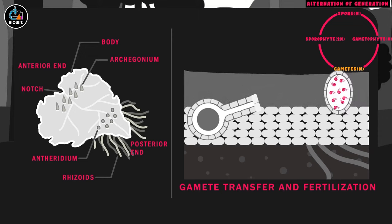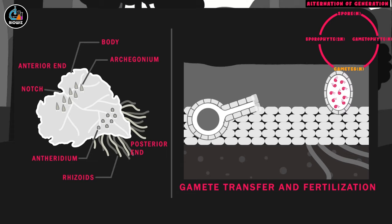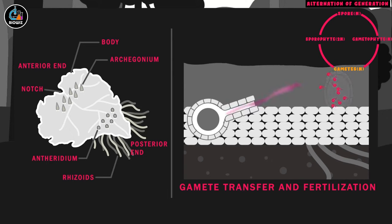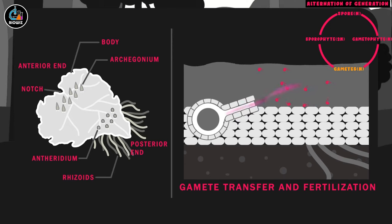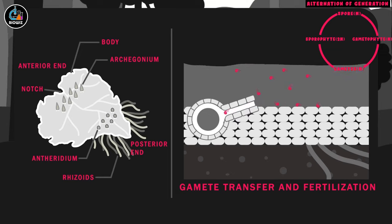These antherozoids reach the archegonium in response to the chemical signals secreted by the cells of archegonium. The gamete transfer in pteridophytes is dependent on the presence of water. As antherozoids reach the archegonium, it fertilizes the female gamete, the egg, resulting in formation of zygote.